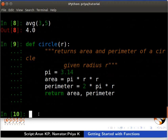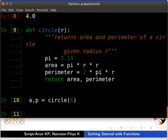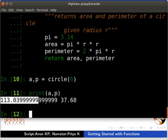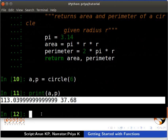Let us call the function circle as a comma p is equal to circle inside brackets 6. Now, type print inside brackets a comma p. We can see the output as area and perimeter of a circle of radius 6.